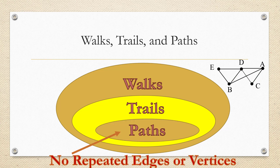When we add even one more condition — we can't repeat any vertices either, so no repeated edges or vertices — then we have what's called a path. That would be something like E to B to D to C to A, never going to any of the edges or vertices already visited a second time.